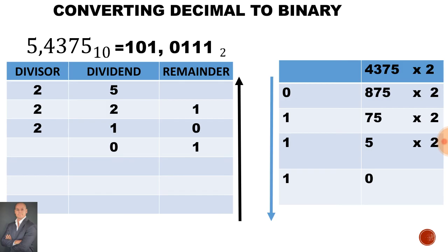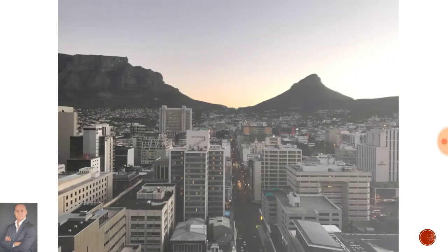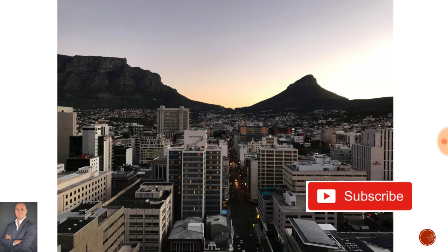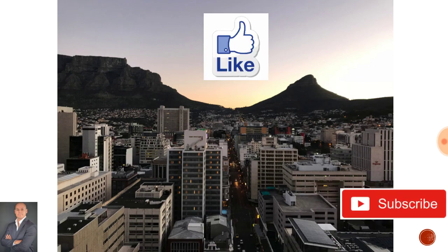We use a small 2 to represent that this is a binary number. Thanks for watching these videos, and please remember to hit that like button to share these videos. Leave a comment if you're happy with the content. Thank you.